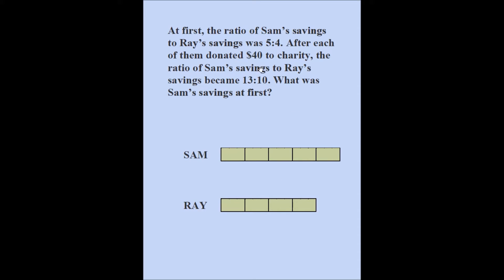They each donated $40 to charity. I don't know how much of the parts are gone, but I do know one thing: whatever section Sam gives away, Ray gives away the same section. And afterwards, the ratio of Sam's savings to Ray's savings is 13 to 10.